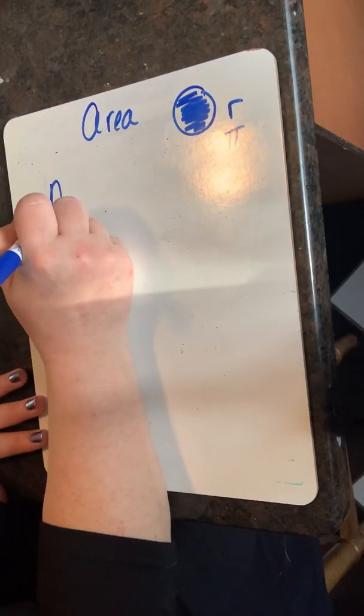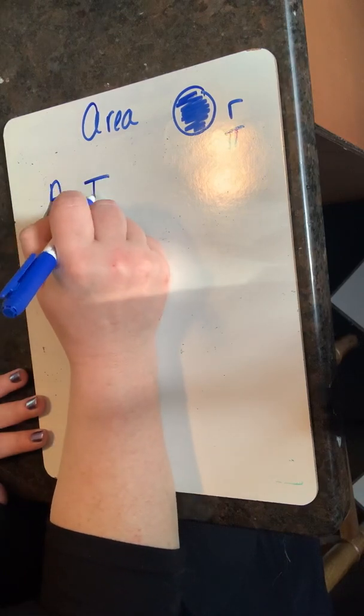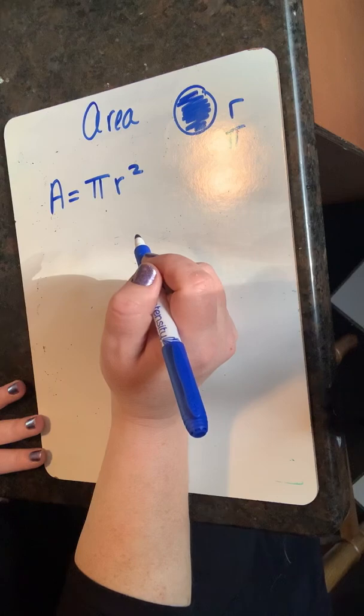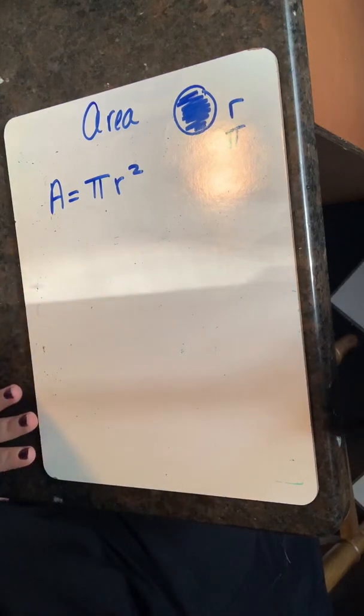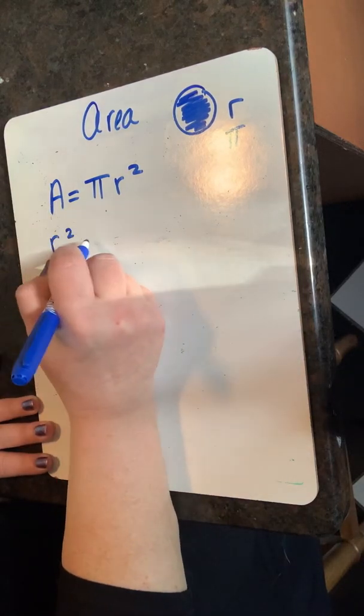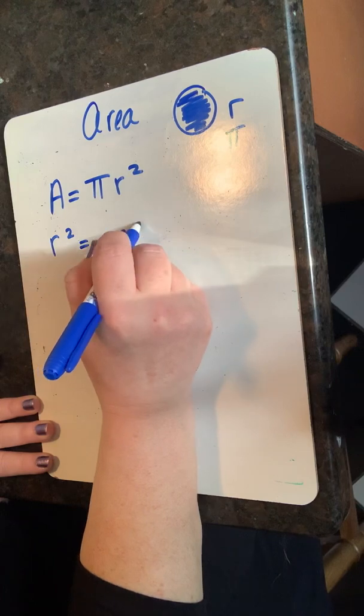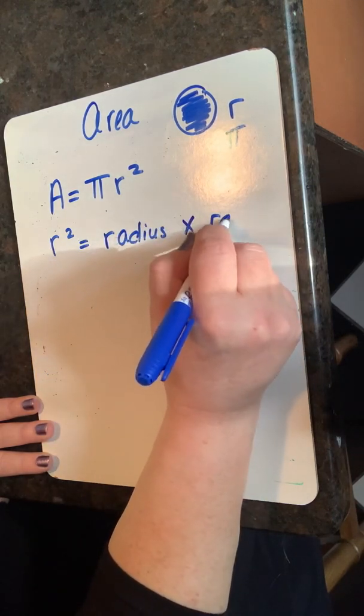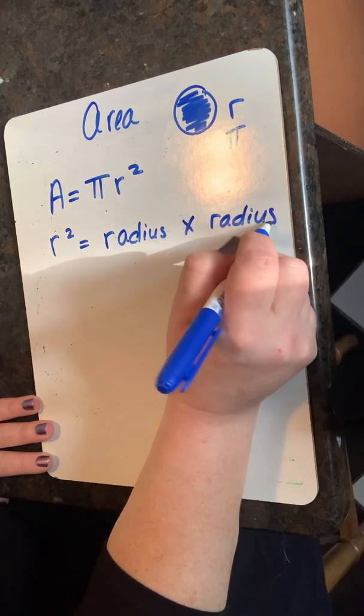The equation for area of a circle is pi r squared. We have to remember that r squared means radius times radius. Tenemos que recordar que al cuadrado significa radio por radio.